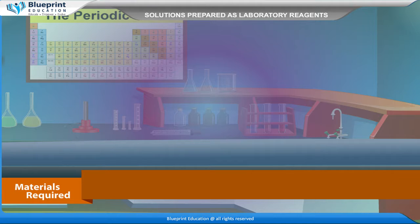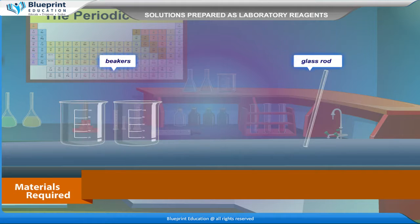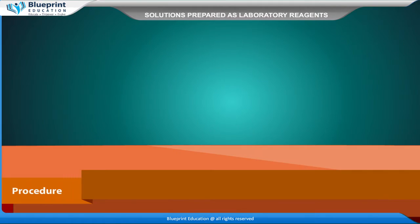The materials required are: a 250 ml volumetric flask, a measuring cylinder, beakers, a glass rod, and sulphuric acid of known molarity 18M.